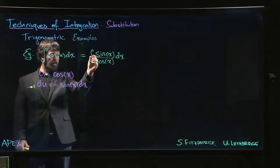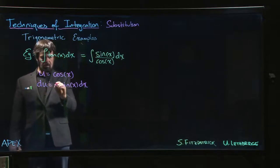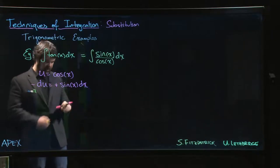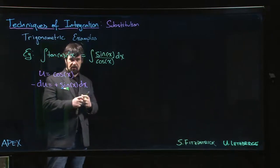And of course, we don't have that minus sign there, but we can just multiply both sides by minus 1. So we have minus du is equal to sine x dx. That puts us in business.